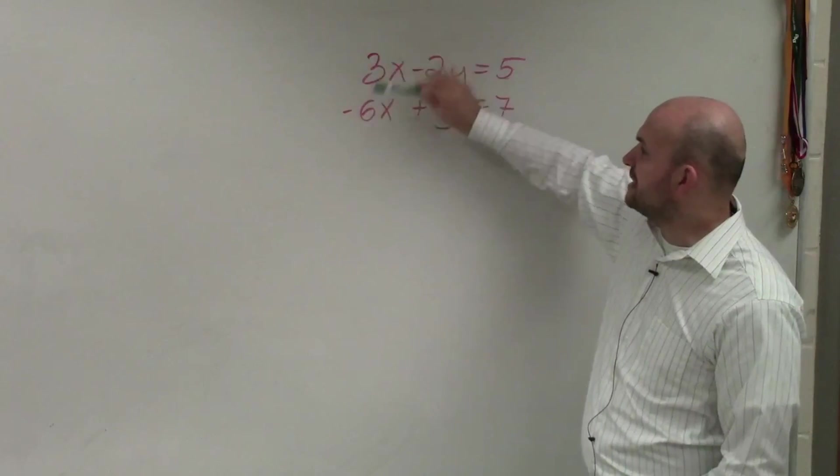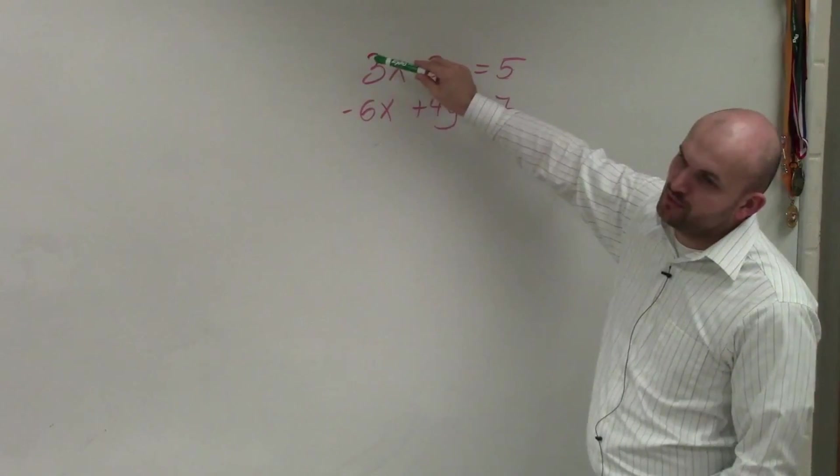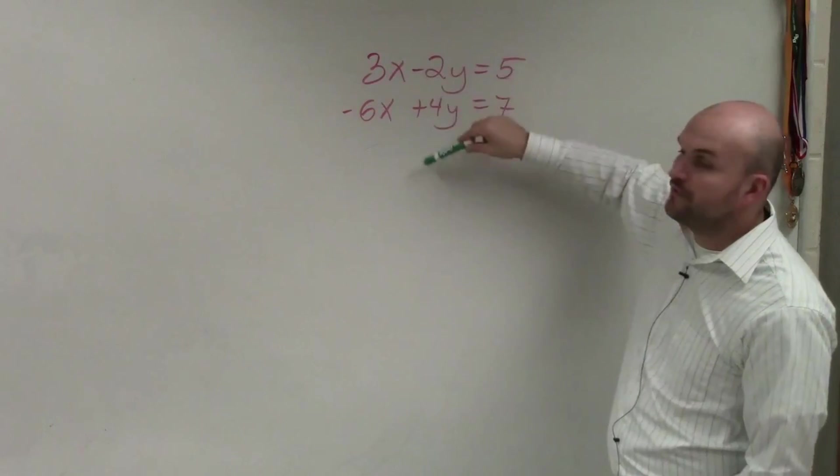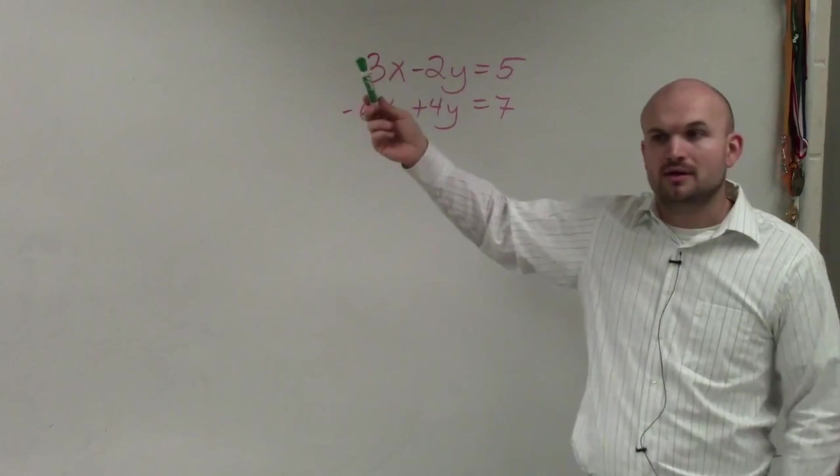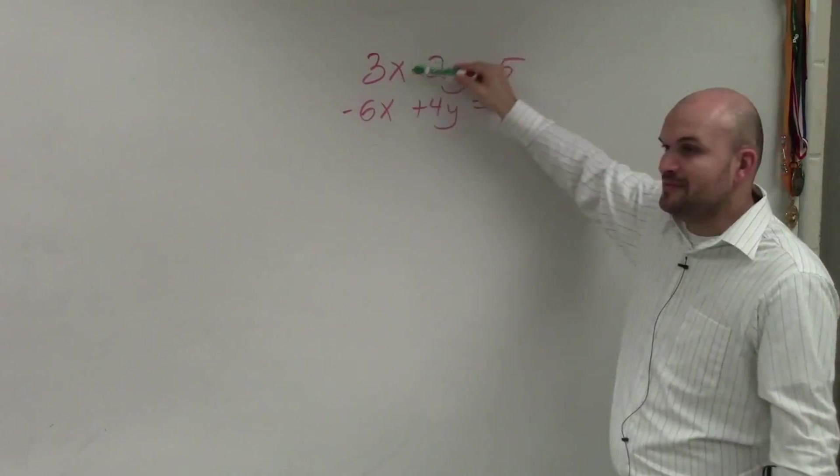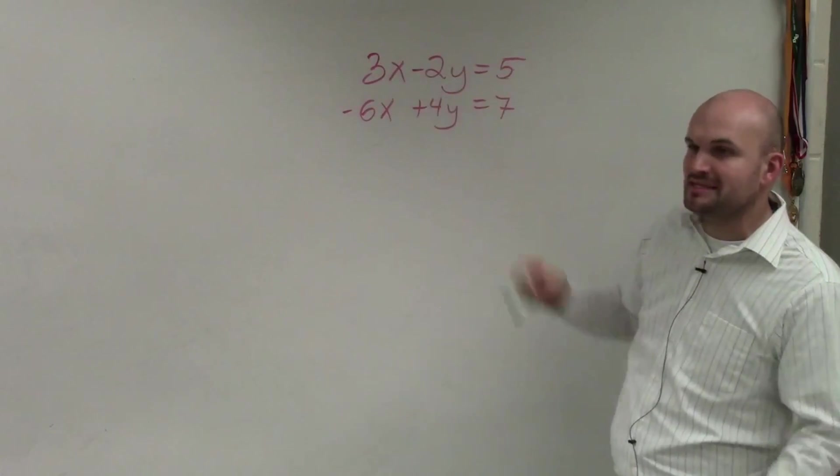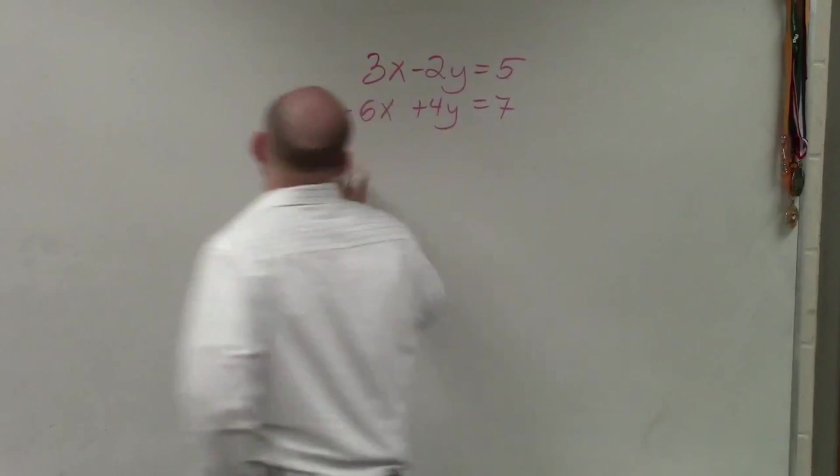Well, 6, forget about the negatives. 3 and 6 have a least common multiple of 6, and 2 and 4 have a least common multiple of 4. So either way, to get them to be the same, all I need to do is multiply my top equation by 2. So I'm going to do that.